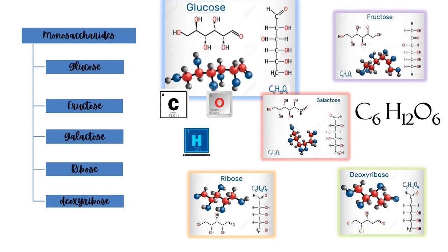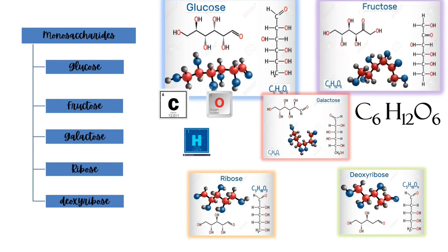Fructose is known as fruit sugar and is absorbed directly into the blood. It has an empirical formula of C6H12O6. The natural sources of fructose are plants, fruits, vegetables, honey, and sugar cane.